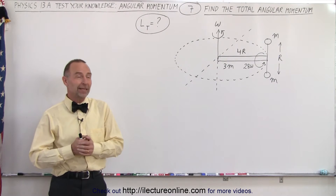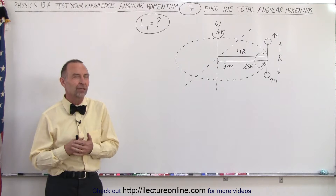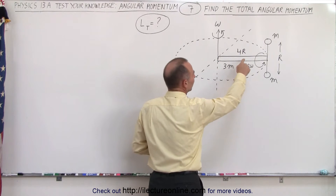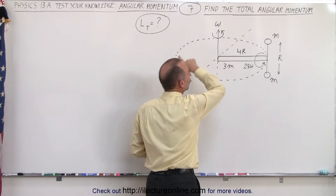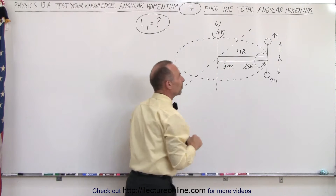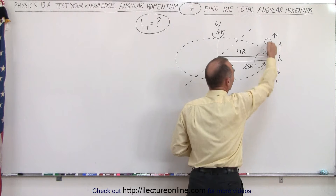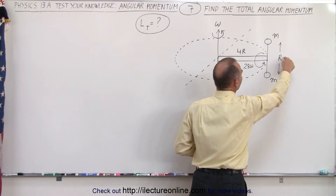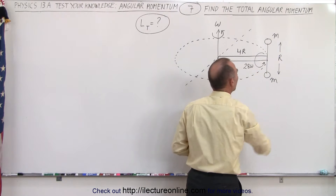Welcome to our lecture online. In this problem we have another very interesting contraption. We have a bar which has a length of 4R and a mass of 3M, which is rotating in a horizontal direction about the end of the bar at the angular velocity omega. At the end of the bar we have a massless bar with two masses at each of the ends, a distance R apart from one another, which are rotating about the end at 28 omega.